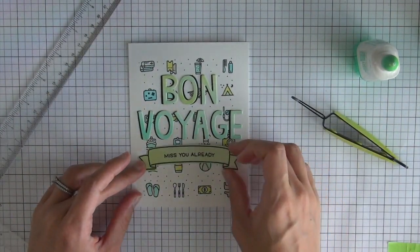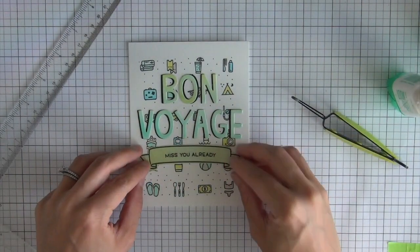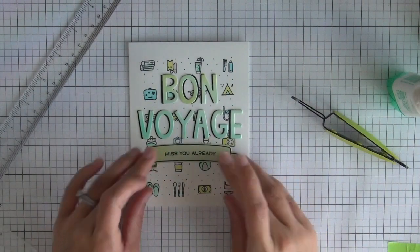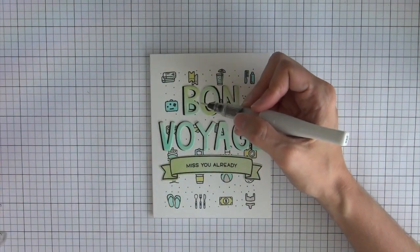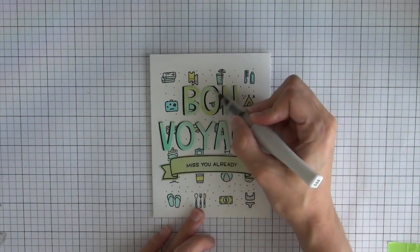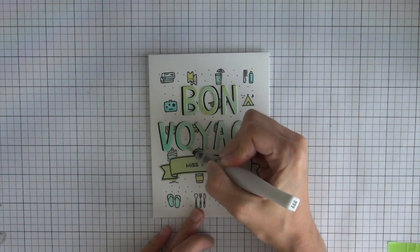Then I just need to adhere the banner, which I'm doing with some liquid glue, and centering that onto the card panel. As one final finishing touch, I'm going to use some clear Wink of Stella and just apply that over the letters to give them a little bit of sparkle.